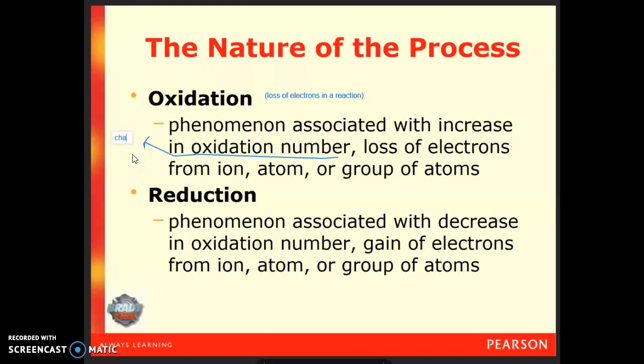So if a substance goes from being positive 2 in charge to positive 5 in charge, we say that its oxidation number has increased. We can also think about it as it's lost electrons. If you go from positive 2 to positive 5, you've lost 3 electrons along the way.